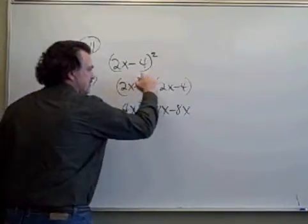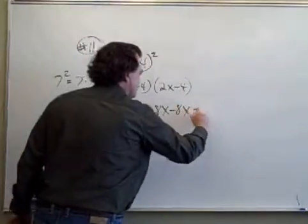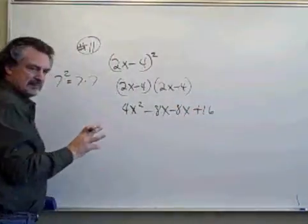And the L of FOIL says take the last one here times the last one here. Minus 4 times minus 4 is plus 16. Minus times minus is plus.